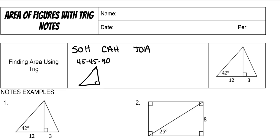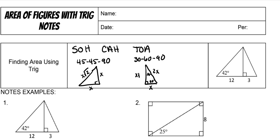Whenever it's a 45-45-90, it's an isosceles right triangle. The hypotenuse is whatever the legs are multiplied times the square root of 2. For a 30-60-90, we have 30 here and 60 here. The short side — whatever that is — the hypotenuse is going to be double that, and the longer side will be whatever that short side is with the square root of 3 next to it.